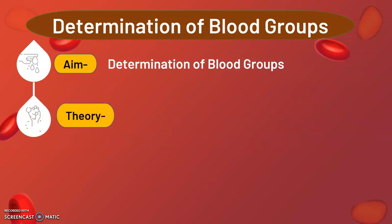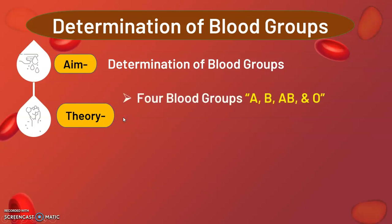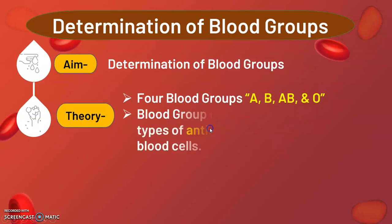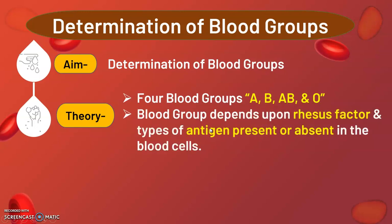What is the theory behind this experiment? There are four main types of blood group: blood group A, blood group B, blood group AB, and blood group O. The presence of antigen and Rh (Rhesus) factor determines whether the blood group is positive or negative. It totally depends on antigen and Rh factor.